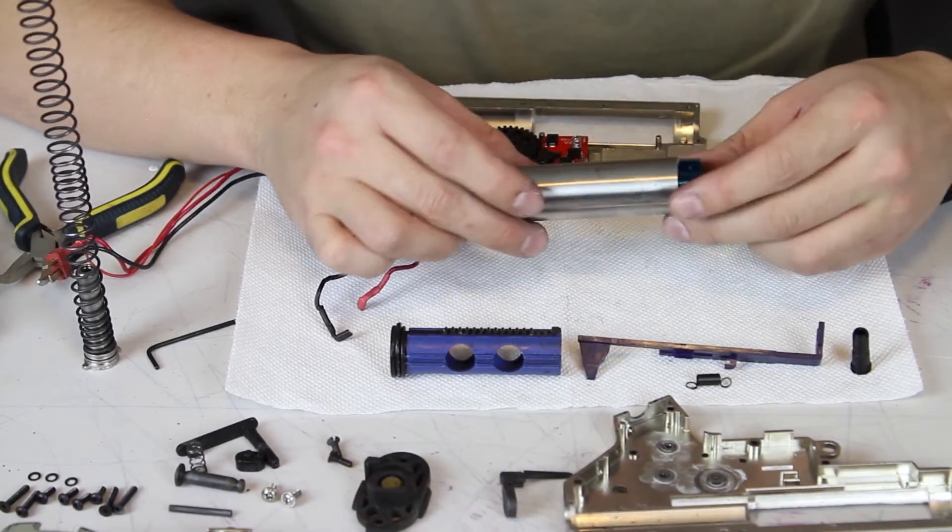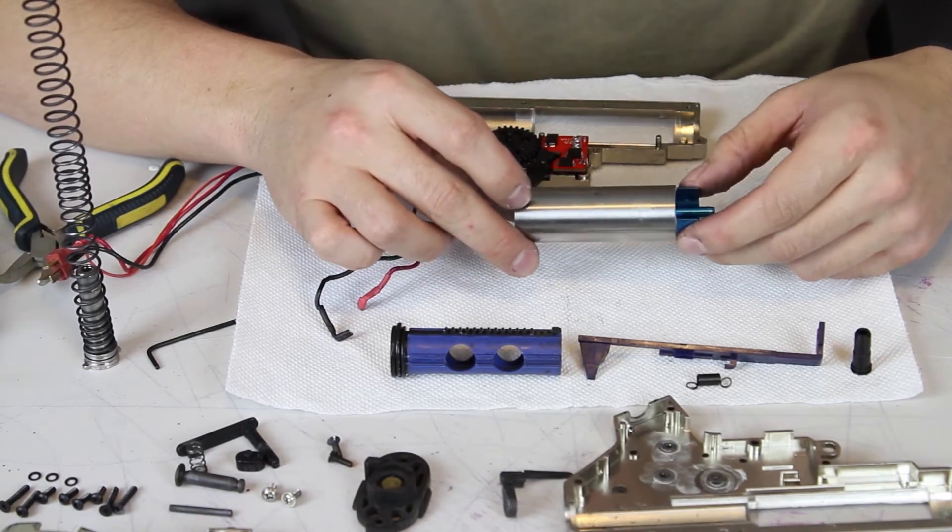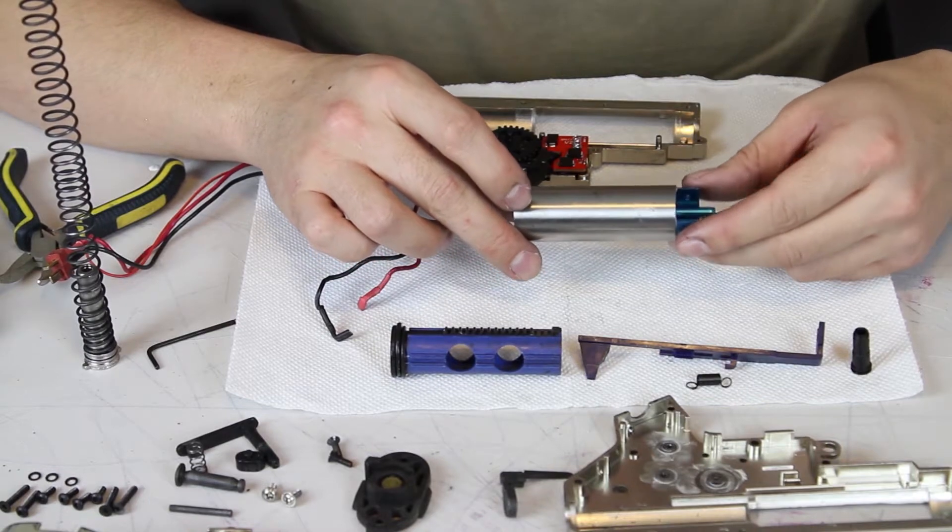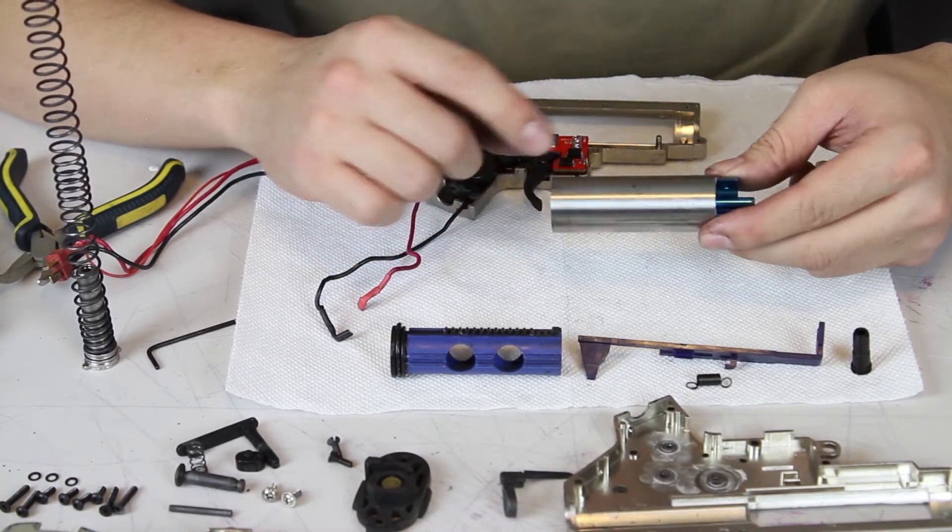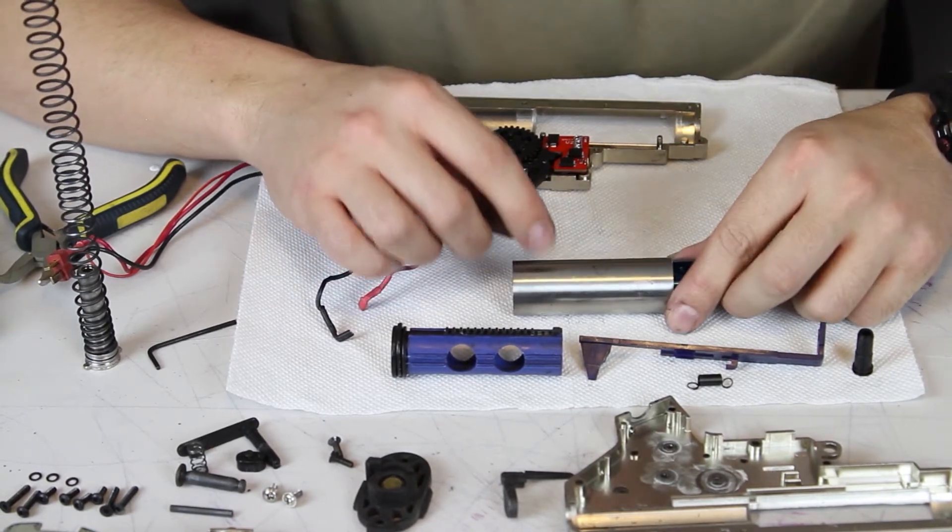You also have the cylinder, which can be ported or non-ported. Non-ported cylinders are used in airsoft guns with longer barrels. Ported cylinders will have a port along the side, and the position of the port will depend on the length of the barrel, with longer barrels using a port closer to the rear edge.